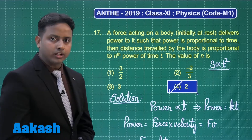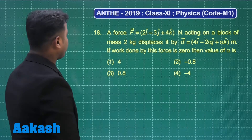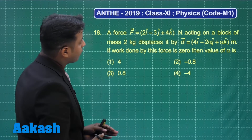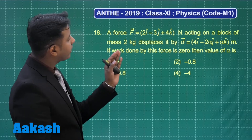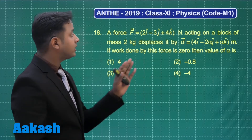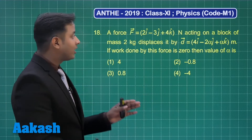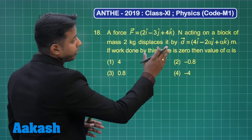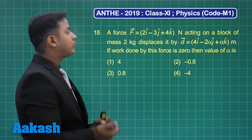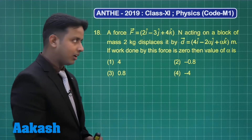The correct option is option number 4. Question number 18 says: a force vector F = 2î − 3ĵ + 4k̂ Newton acts on a block of mass 2 kg, displacing it by displacement vector 4î − 2αĵ + αk̂ meters. If the work done by this force is 0, find the value of alpha.